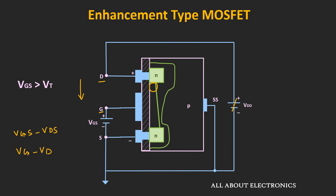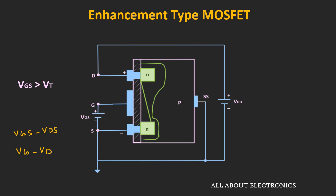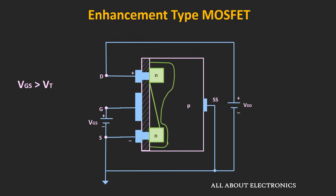As we keep increasing Vds, at one particular voltage the pinch-off condition will occur, and the drain current flowing through the circuit will get saturated. The voltage Vds at which this pinch-off condition occurs is known as the saturation voltage, expressed as Vgs minus Vt, where Vt is the threshold voltage. This means pinch-off occurs whenever the difference between the gate and drain terminal equals the threshold voltage — the point at which the channel is just being created.